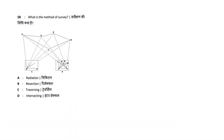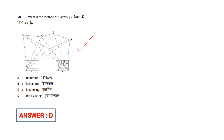What is the method of survey? What is the type of survey shown in the figure? Options: Radiation, Resection, Traversing, Intersecting. If you identify this figure, the answer is option D — Intersecting.